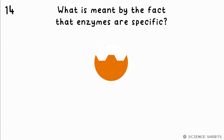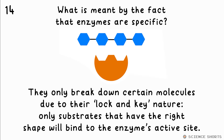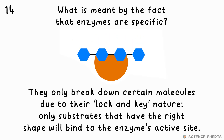Question 14. What does it mean when we say that enzymes are specific? This means they only break down certain molecules due to their lock-and-key nature. Only specific substrates — that's the molecule being broken down — will bind to the enzyme's active site in order to be broken down.